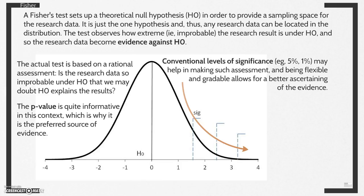Conventional levels of significance, for example 5% or 1%, may help in making such assessment. And being flexible and gradable allows for a better ascertaining of the evidence.